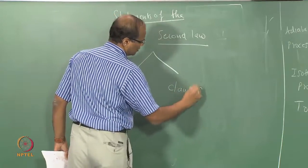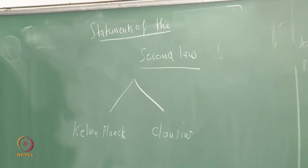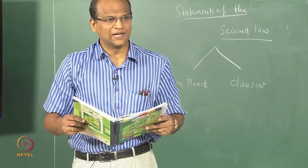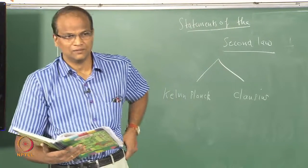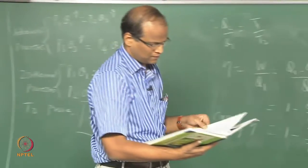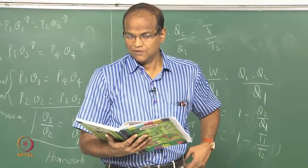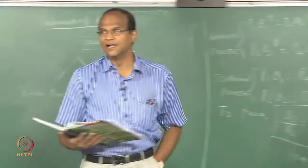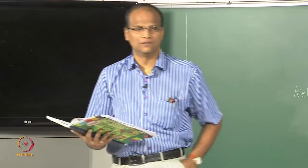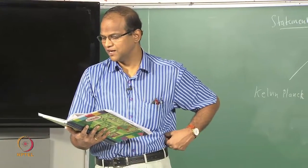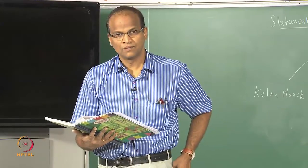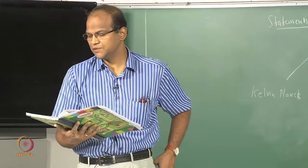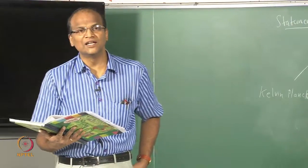There are two statements: the Kelvin-Planck statement and the Clausius statement. The Kelvin-Planck statement of the second law: it is impossible to construct a device which, when operating in a cycle, produces work by having heat interaction with a single reservoir at a fixed temperature.